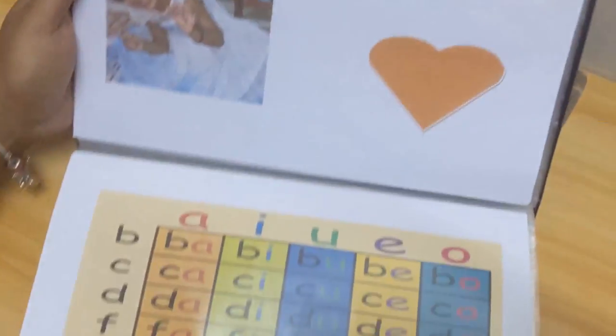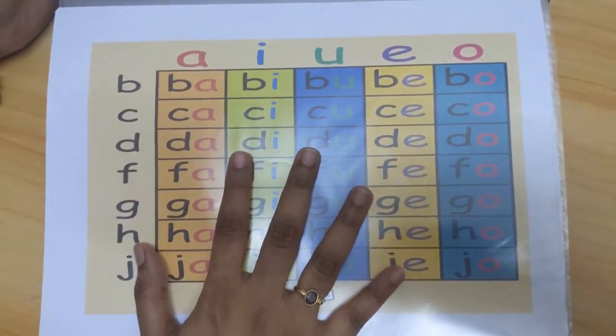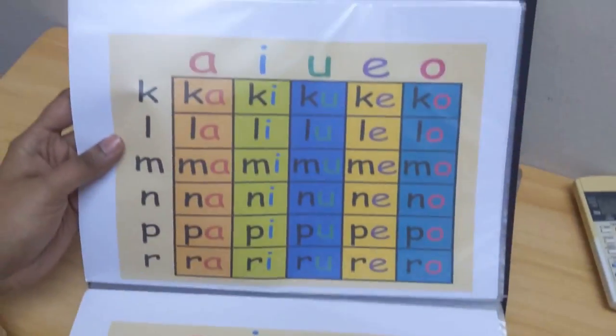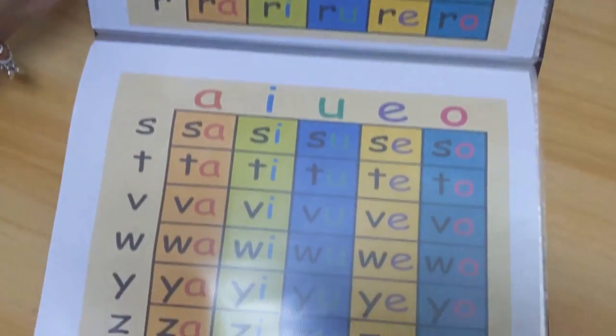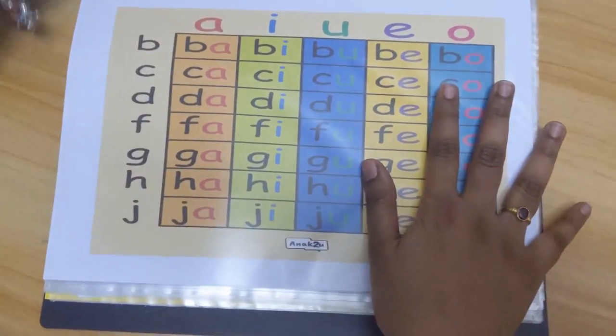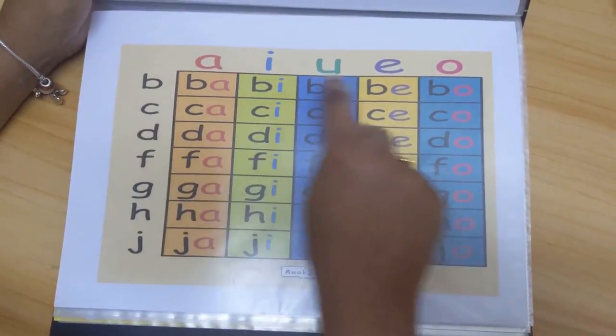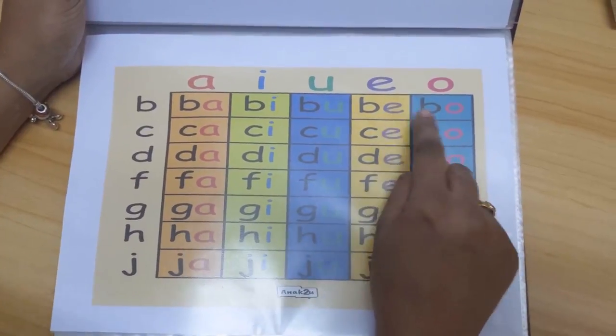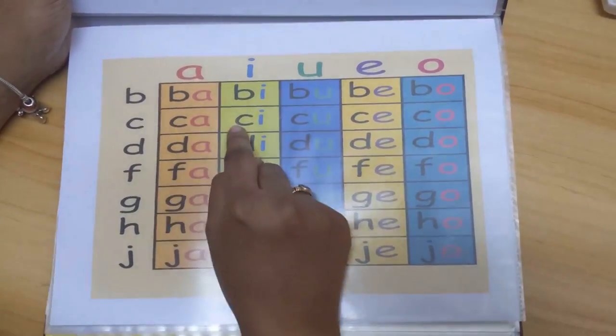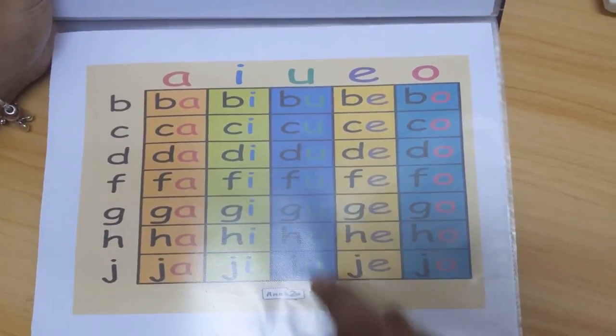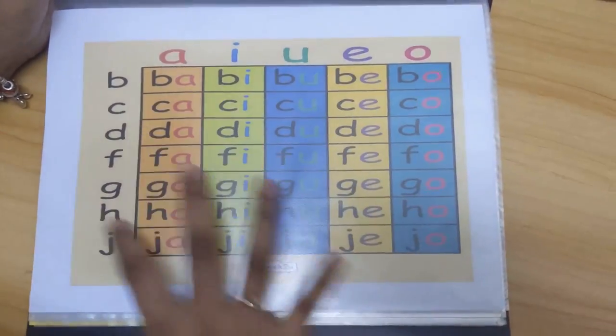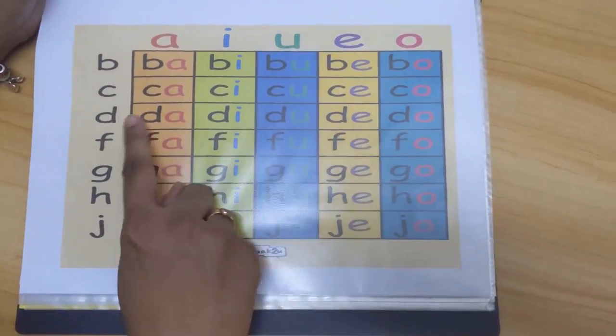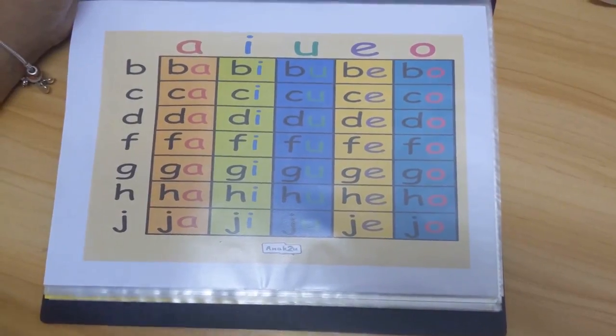Now this one is suku kata Bahasa Malaysia. So here I've added all of the Malay suku kata. We've got one, two, three, so I've done up to Z. Here what we do is we go the consonants, so we go ba, bi, bu, be, bo, then we go cha, chi, chu. She's still learning Malay, so this is something relatively new to her, so I thought it's just good to add it on. She's still at C, so I only do one consonant a day. Don't get your child confused, don't make it too stressful for them.